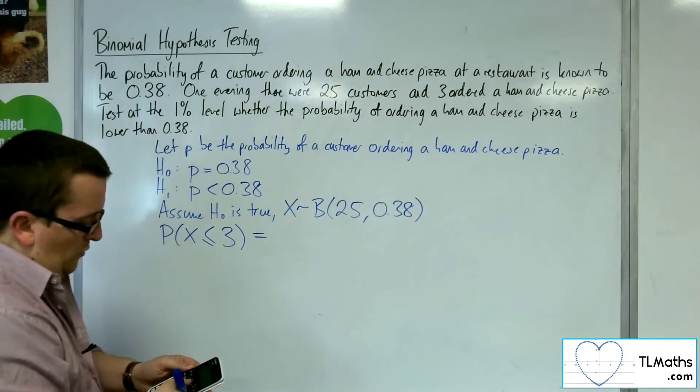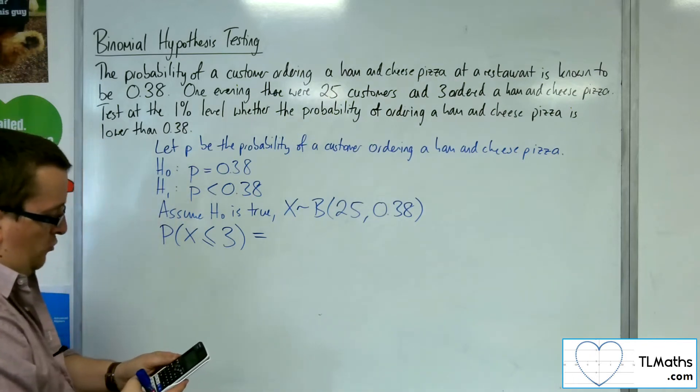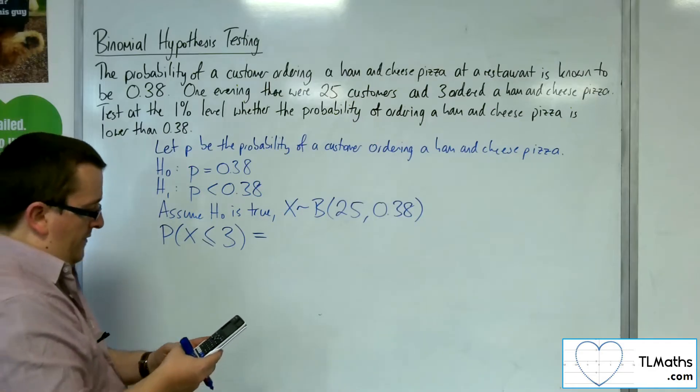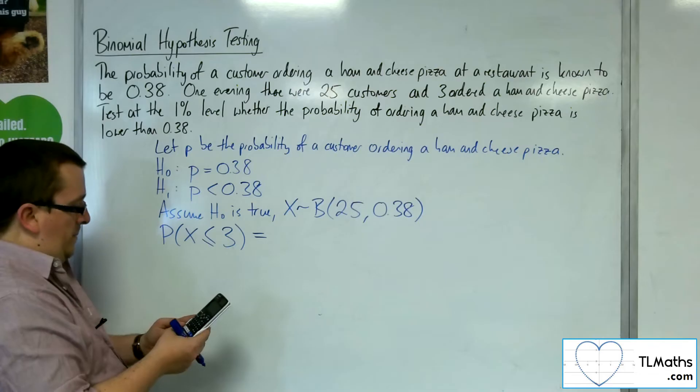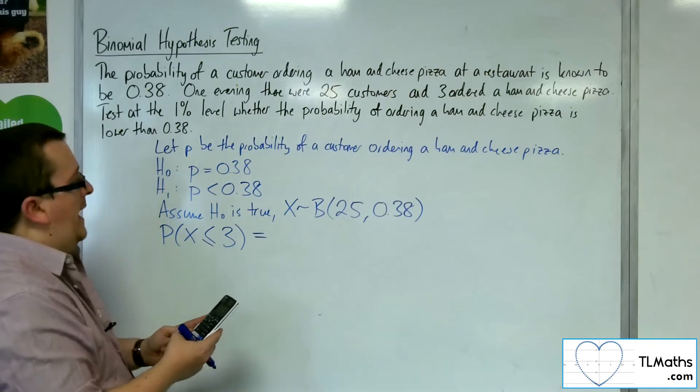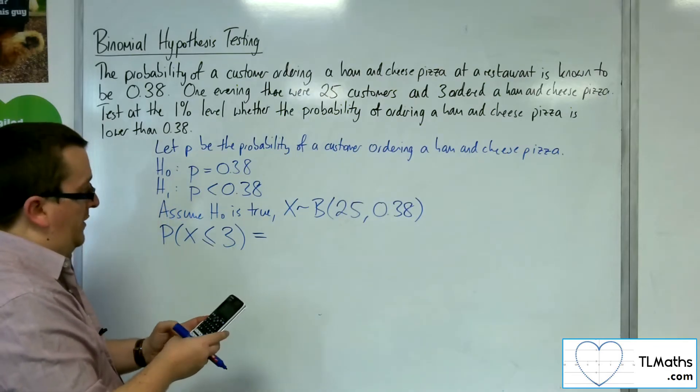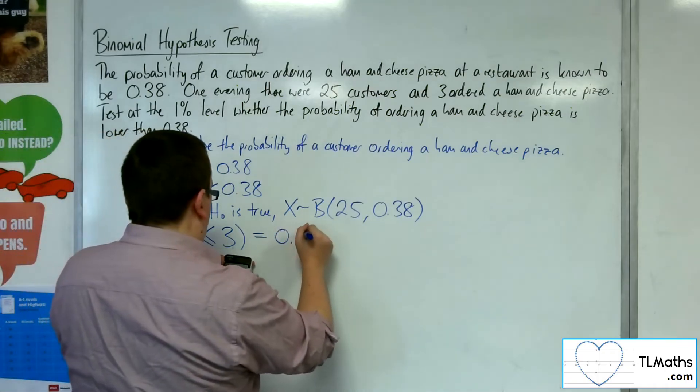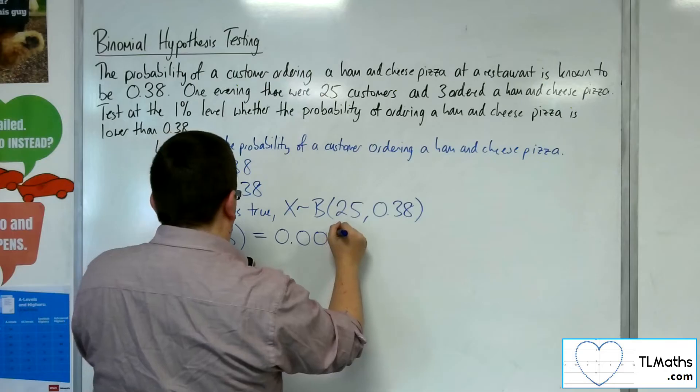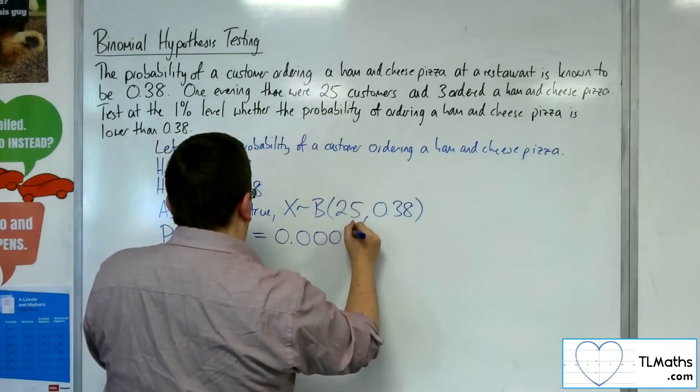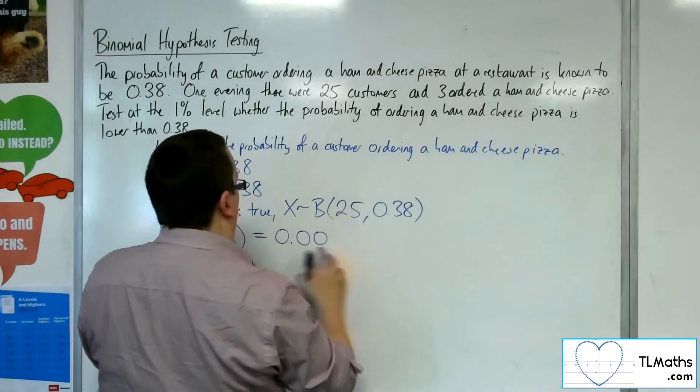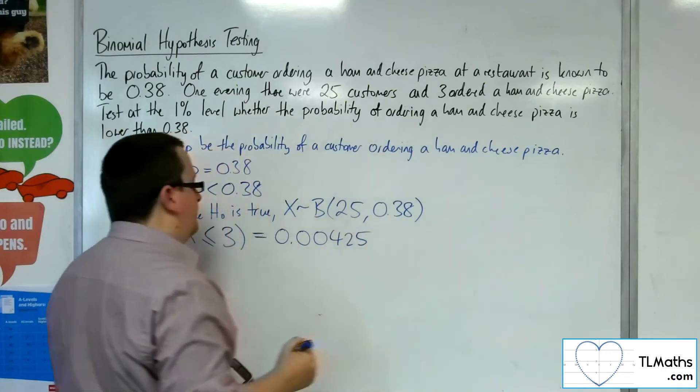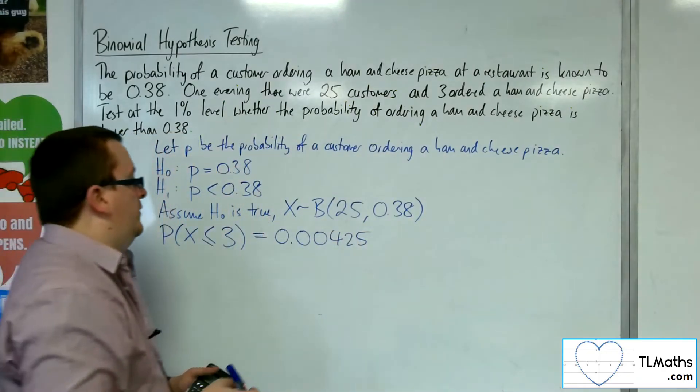So we can do that directly in the calculator, going to number 7 distribution and binomial CD. Then we want a variable, then we can type in X as 3, N as 25, and a probability of 0.38. And what we get is 0.00425 to 3 significant figures.